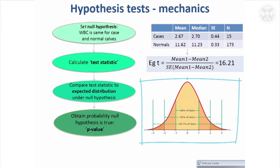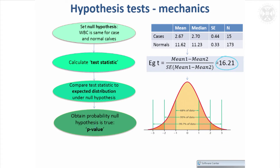Values of about minus two and plus two are reasonably uncommon; when you get to minus three and plus three they're very uncommon. Our value of 16.21 is really unlikely given this null hypothesis distribution — it would be somewhere way off the scale. That leads to a very small probability of the null hypothesis being true, and that's what gives us our p-value. The p-value is defined as the probability that the null hypothesis is true given our test statistic.